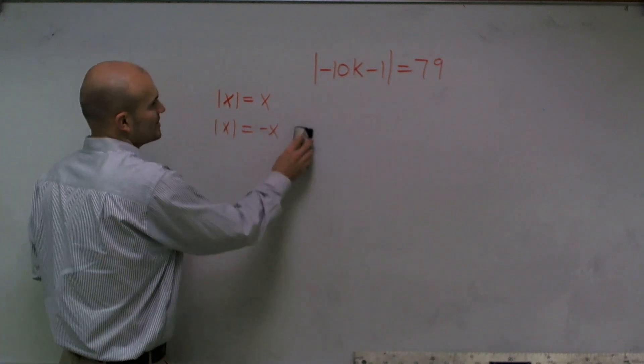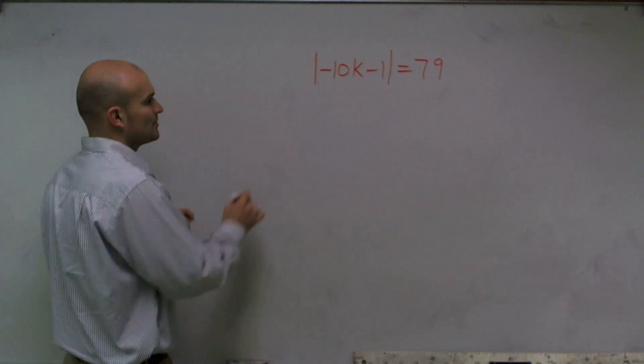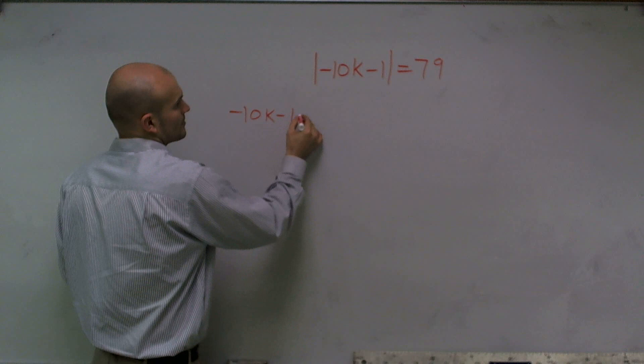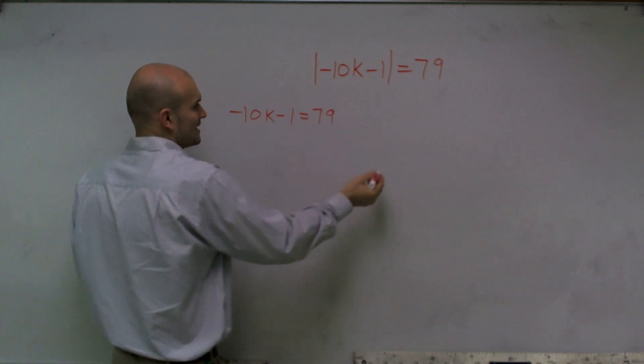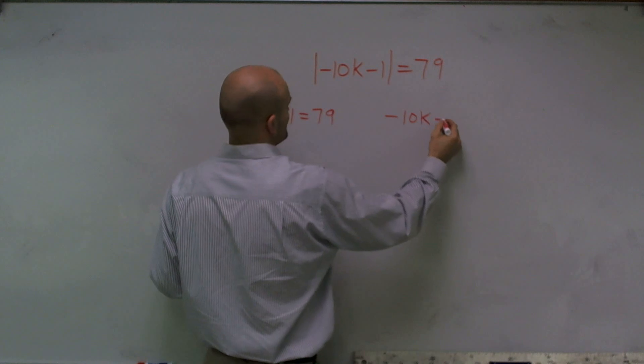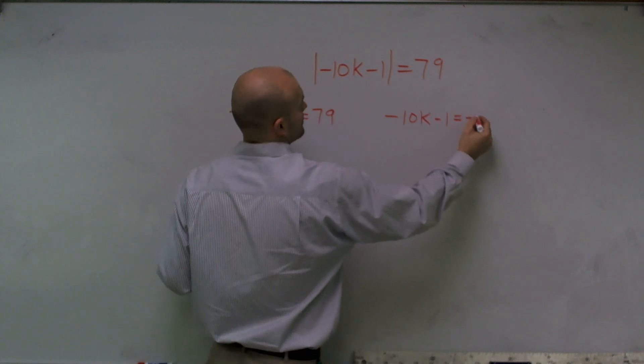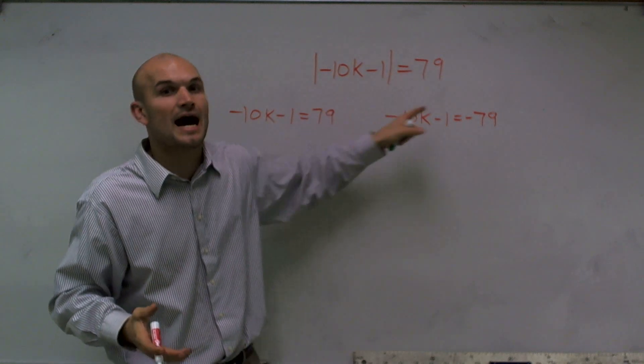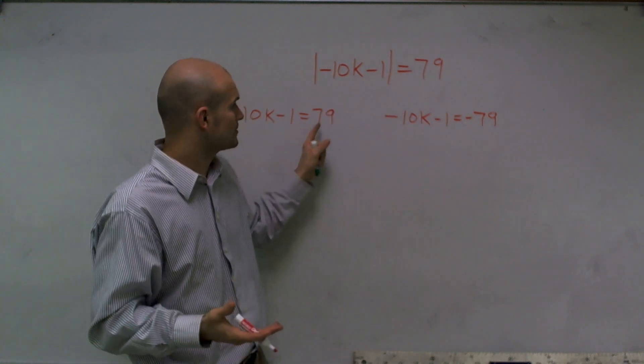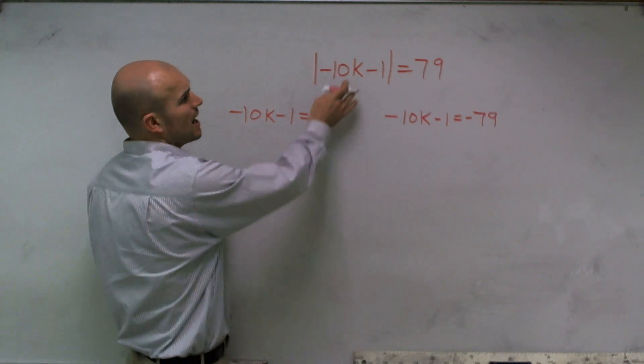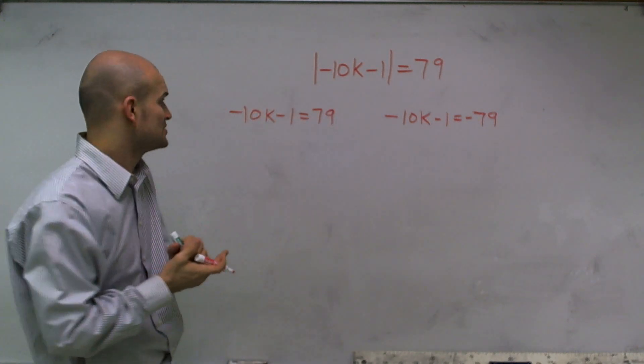So what I'm going to do is set up two separate cases. First case is the positive value, and the second case is the negative value, or the opposite value I should say. So now I've set up two separate cases where I have the opposite values for my other side of my equation. Now I'm going to need to solve for k to find my two values.